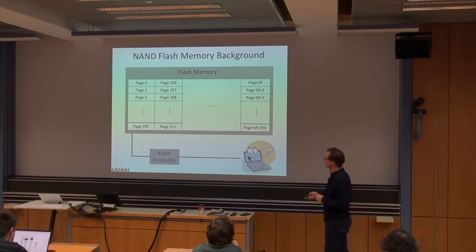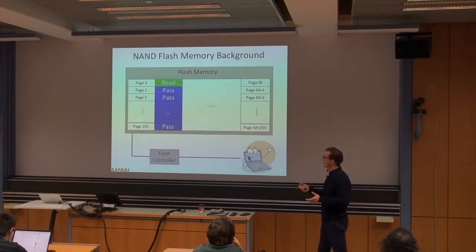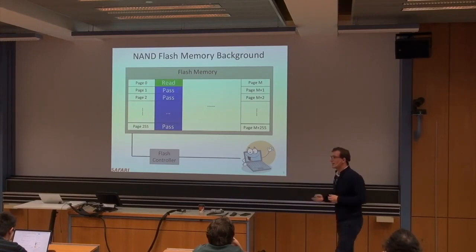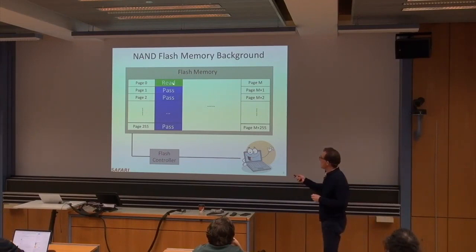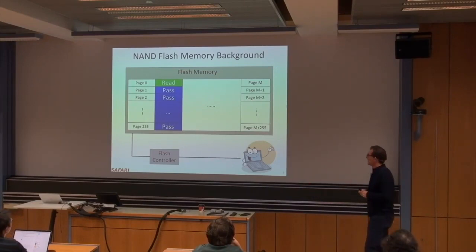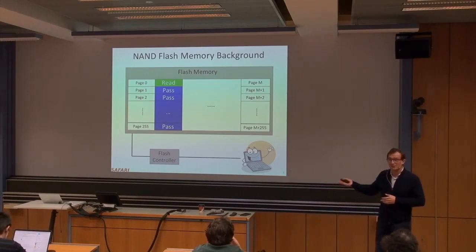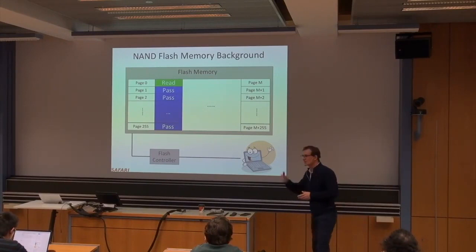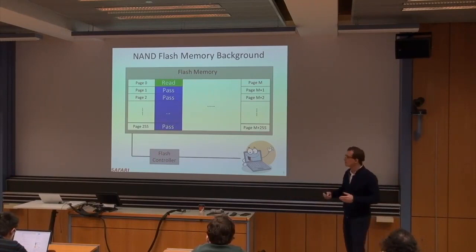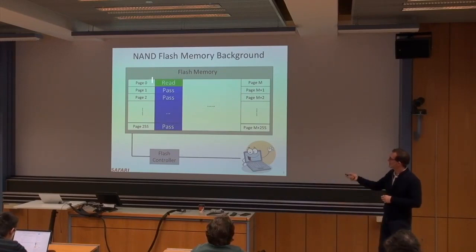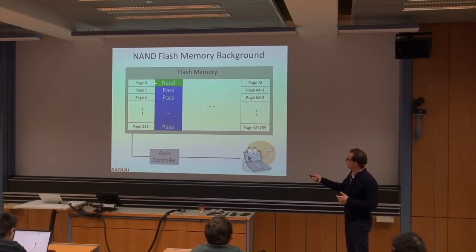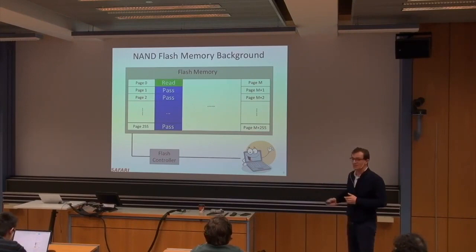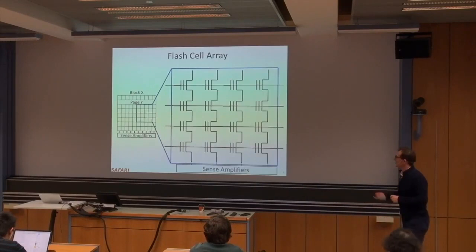If you want to read a page, you need to apply a read reference voltage to that particular page and apply a pass-through voltage to everything else. This is because of how flash memory operates. This is different from DRAM — in DRAM, you apply a high voltage to a word line and don't touch any other word lines. In NAND flash, things are connected in a NAND string to optimize for high capacity, and you need to ensure values pass through so they can be sensed in the sense amplifiers.